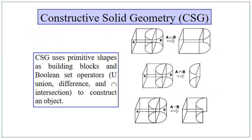Here is another example of CSG. Constructive solid geometry uses primitives — a cube and a cylinder. A union B gives the combined end product. A intersection B gives the common area between the square box and the cylinder. And A minus B results in the differentiated block where block B is deleted from block A.